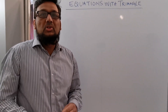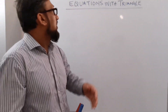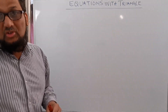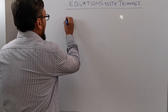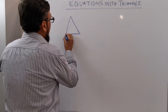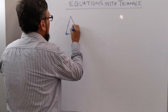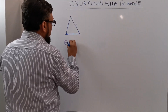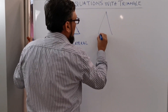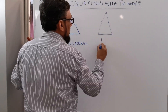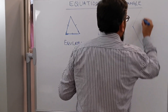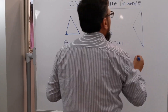Hi, my name is Mohammed and today I'm going to discuss a topic: equations with triangles. As we discuss about triangles, there are three types of triangle. The first is called equilateral, the second is called isosceles, and the last one is scalene.